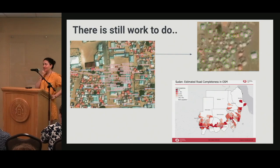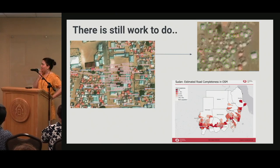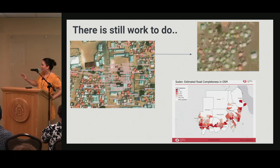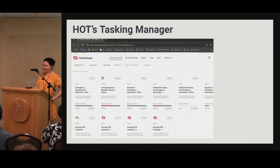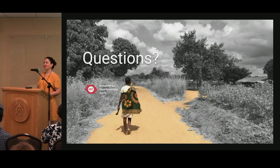OpenStreetMap has really become the go-to access point for geographic data. There's still a lot of work to do — there are tons of downloads for humanitarian purposes, but there are still a lot of gaps. These are examples of figuring out where displaced people in Somalia are, and looking at Sudan and where there are road gaps. There's still a lot of mapping to be done. I hope you check out HOT's Tasking Manager — if you go to HOTOSM.org and click 'start mapping,' you'll all be able to pick it up really fast.